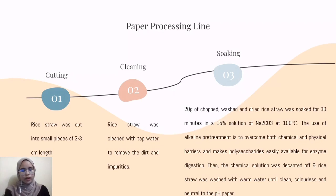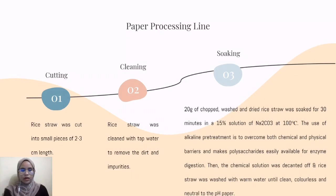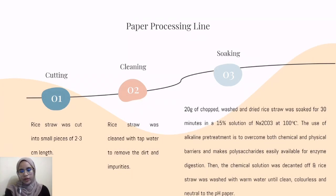The process begins with the cutting process, in which rice straw is cut into small pieces of 2 to 3 cm in length. Then the cleaning process — rice straw is cleaned with tap water to remove dirt and impurities. Then the soaking process: 20g of washed and dried rice straw is soaked for 30 minutes in a 15% solution of sodium carbonate at 100 degrees Celsius.